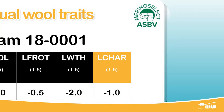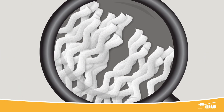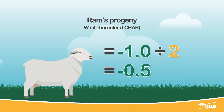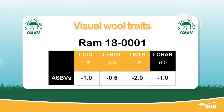LCHAR is wool character and describes the definition of crimp in the wool. A ram with a wool character ASBV of negative 1.0 will on average produce progeny that have a negative 0.5 score for better defined crimp, when compared to a ram with an ASBV of 0.